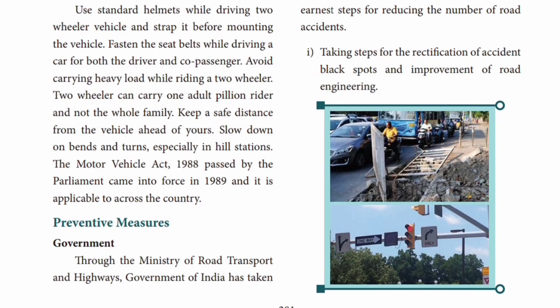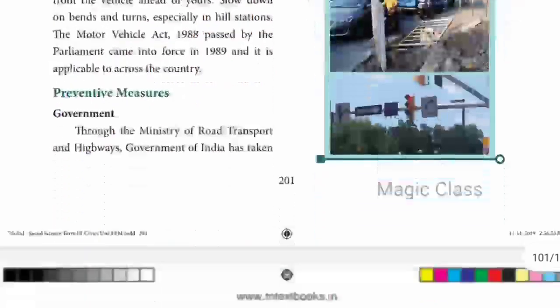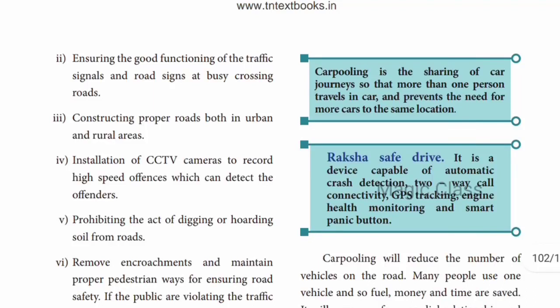Next are preventive measures. The Government, through the Ministry of Road Transport and Highways, has taken earnest steps for reducing the number of accidents. The government is taking steps for the rectification of accident black spots - those areas will be monitored. The government is also ensuring the good functioning of traffic signals so that traffic signals work properly.